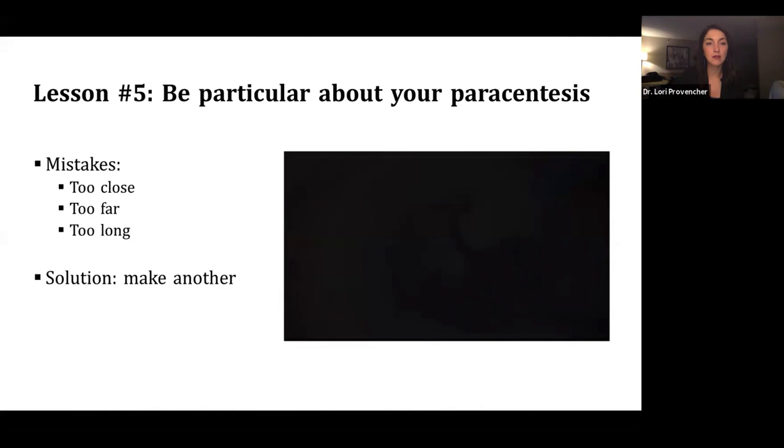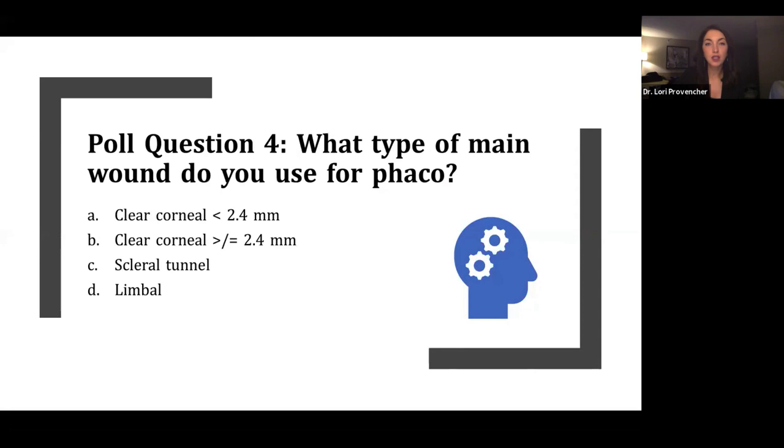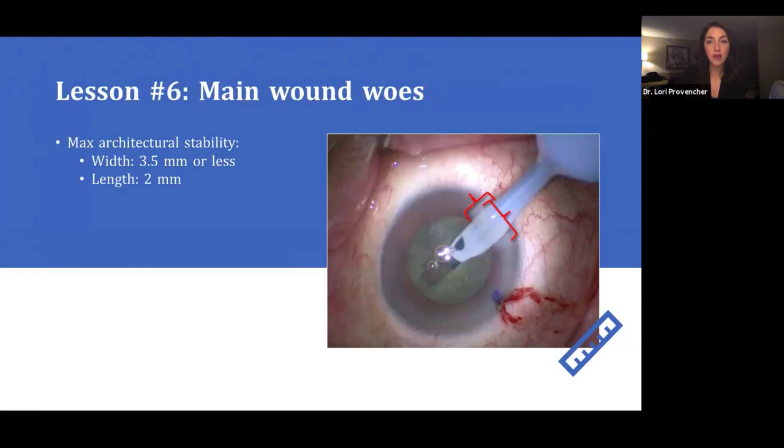So we'll do one more poll question. What type of main wound do you use for your phacoemulsification? Are you using a pretty small clear corneal wound, a larger wound, a scleral tunnel, or a limbal wound? It looks like the majority of you are using a clear corneal wound. So I learned early on there are a lot of ways to make mistakes when it comes to wound construction. But the ideal goal is to have a wound that's 3.5 millimeters or less and 2 millimeters in length.